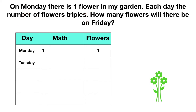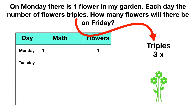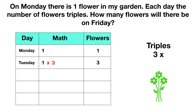On Tuesday, the problem says the number of flowers triples. To triple means to become three times as much, so our one flower gets multiplied by three. One times three means now there are three flowers. On Wednesday, we'll have our same amount but multiply it by three again. One times three times three gives us nine flowers.